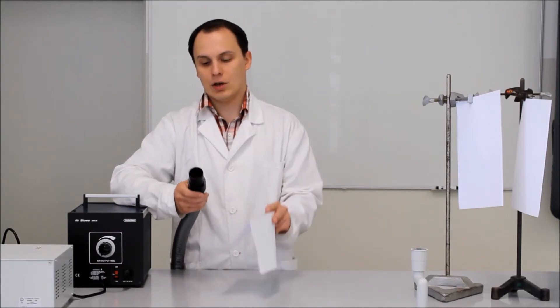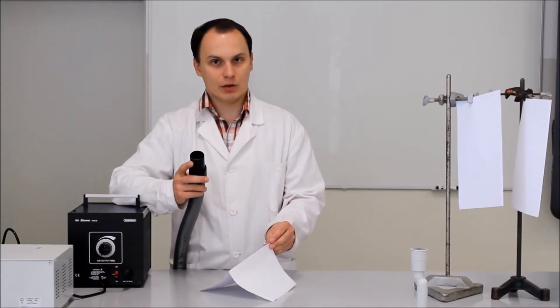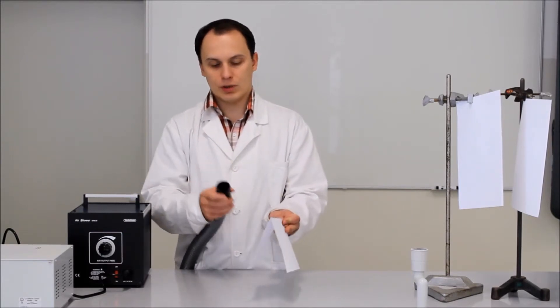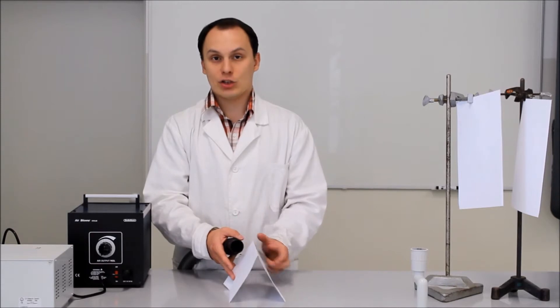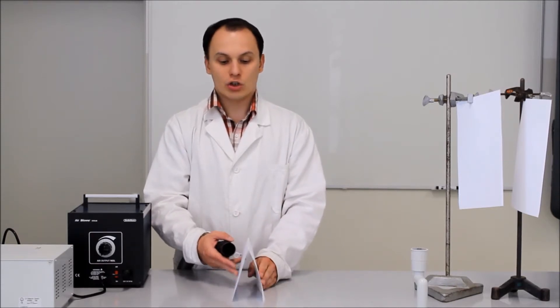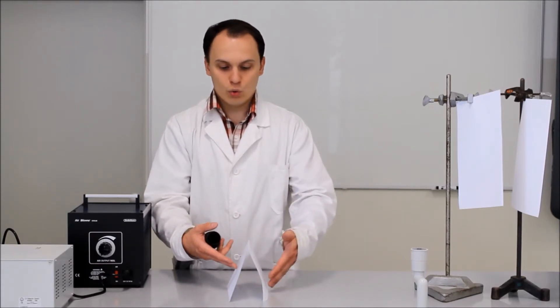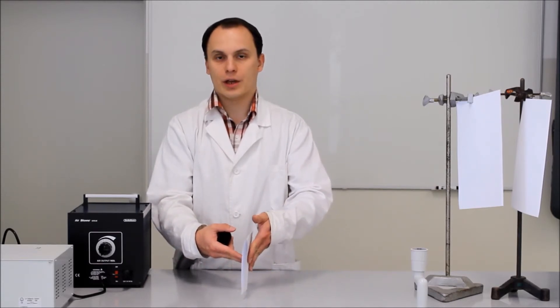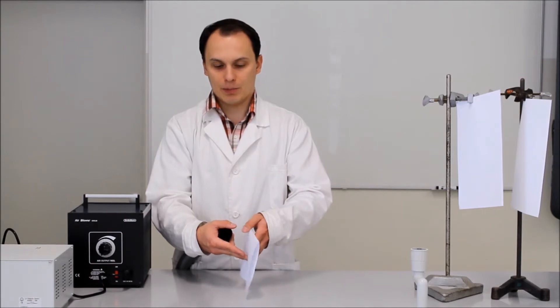A törvény szerint, hogyha az áramlási sebesség megnő, akkor a nyomás lecsökken. A két papírlap között megnőtt az áramlási sebesség, lecsökkent a nyomás, és a külső nyomás, ami ezáltal nagyobb lett, az összenyomta, összeszorította ezt a két papírlapot.